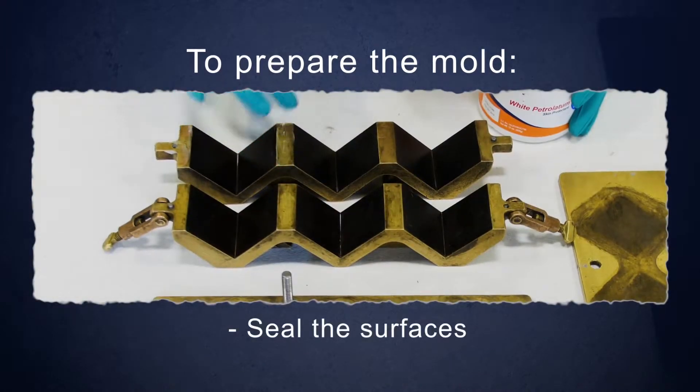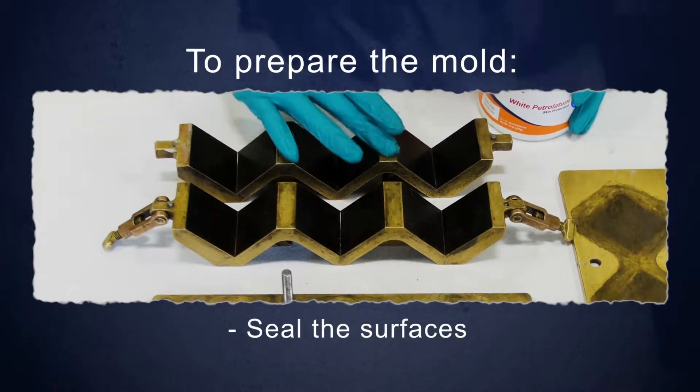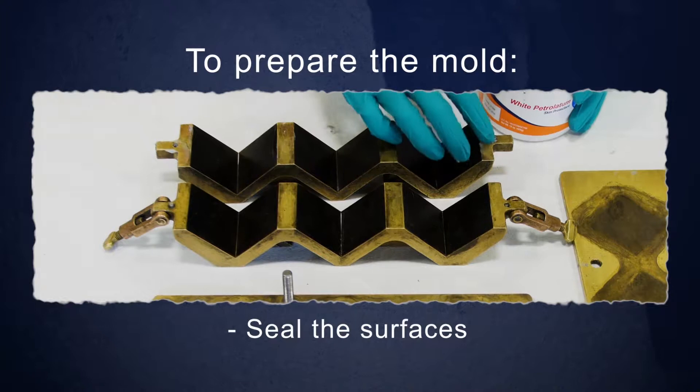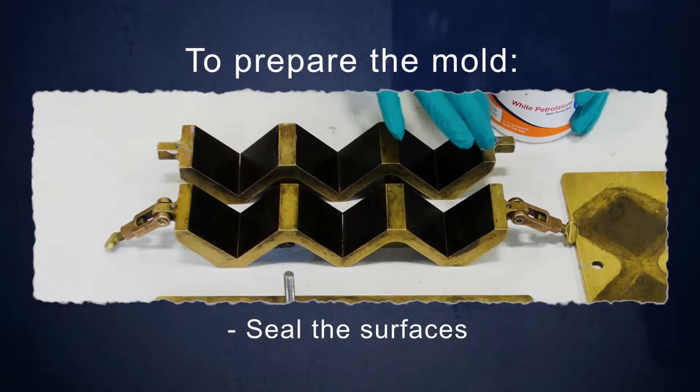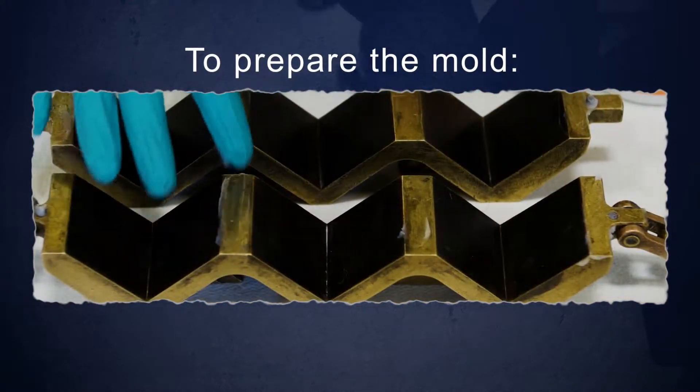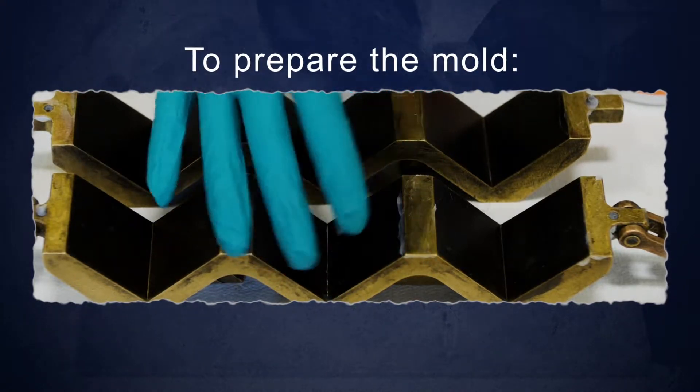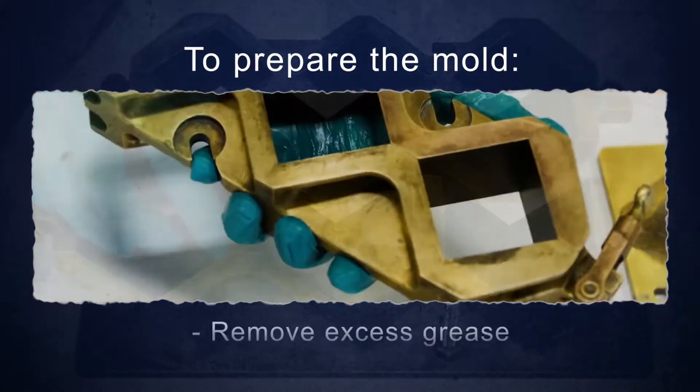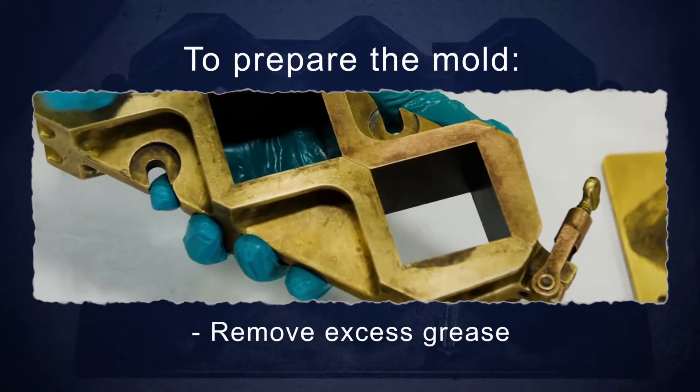Seal the surfaces where the halves of the mold join by applying a coating of light cup grease, such as petrolatum. The amount should be sufficient to extrude slightly when the two halves are tightened together. Remove any excess grease with a cloth.